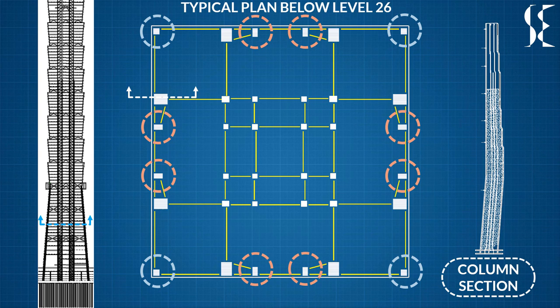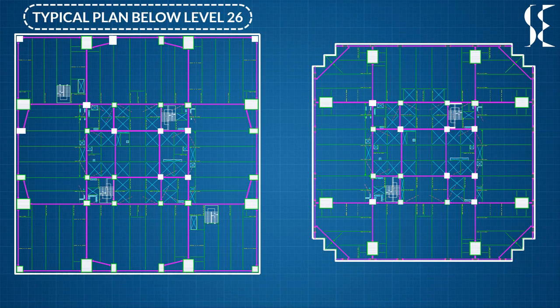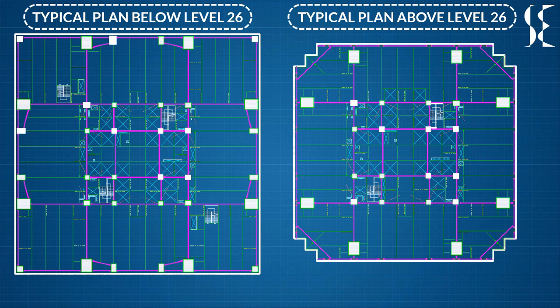Main floor corridors, shown in yellow, connect each super column through moment connections with a core corner column along the same line. The rest of the floor beams are shown in green in this typical plans below 26th level and above 26th level which supports the composite floor. We can also see locations of stairs and shaft openings for elevators and utility services.